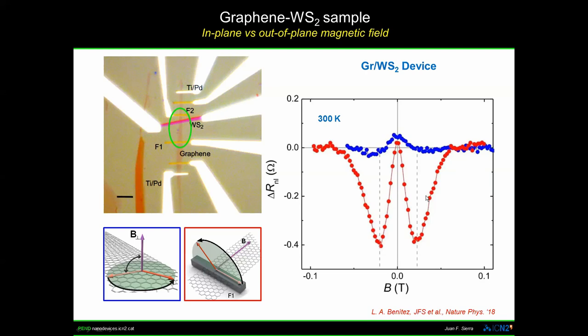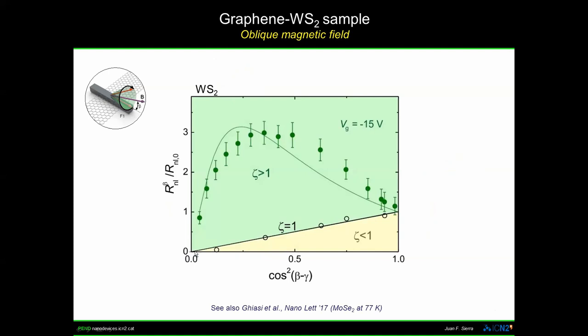Plotting this as cosine squared: the straight line is what you expect for an isotropic system; the dots from our pristine graphene control sample fall on this line. When we bring together the transition metal dichalcogenide with graphene, we see a strong deviation from the isotropic case.